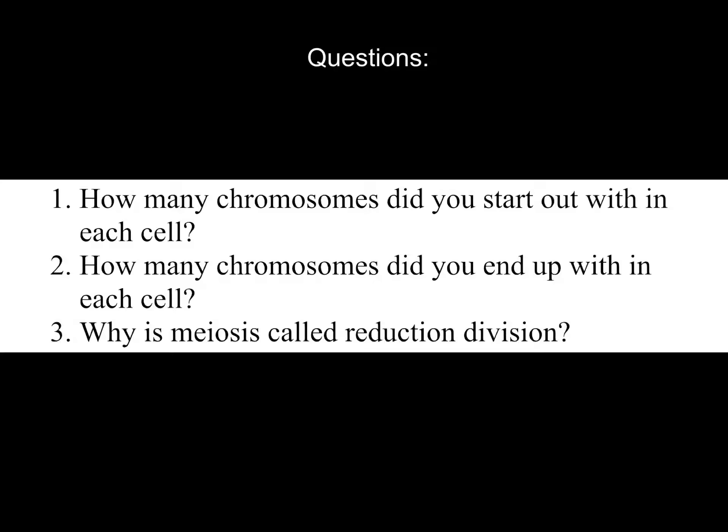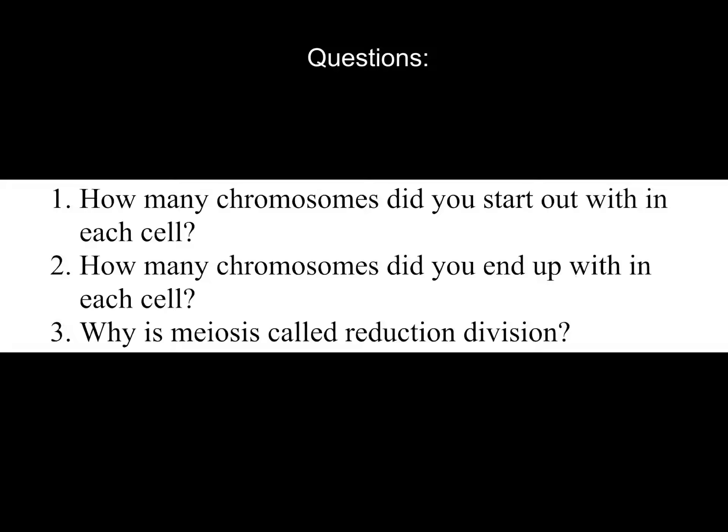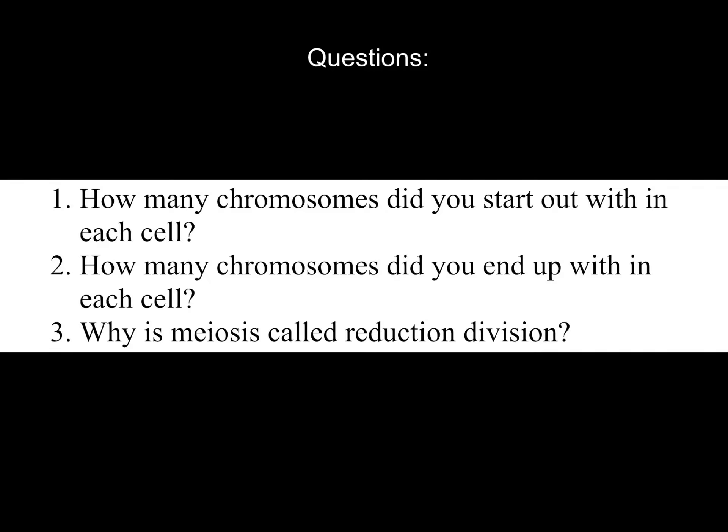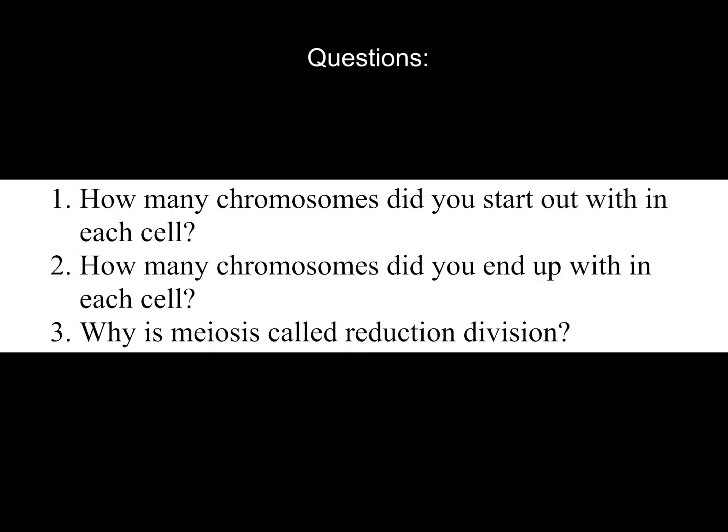We had 46 chromosomes at the beginning of meiosis one, and at the end of meiosis two, we had 23 chromosomes in four cells. Meiosis is called reduction division because the cells divide to form cells that have half the original number of chromosomes.